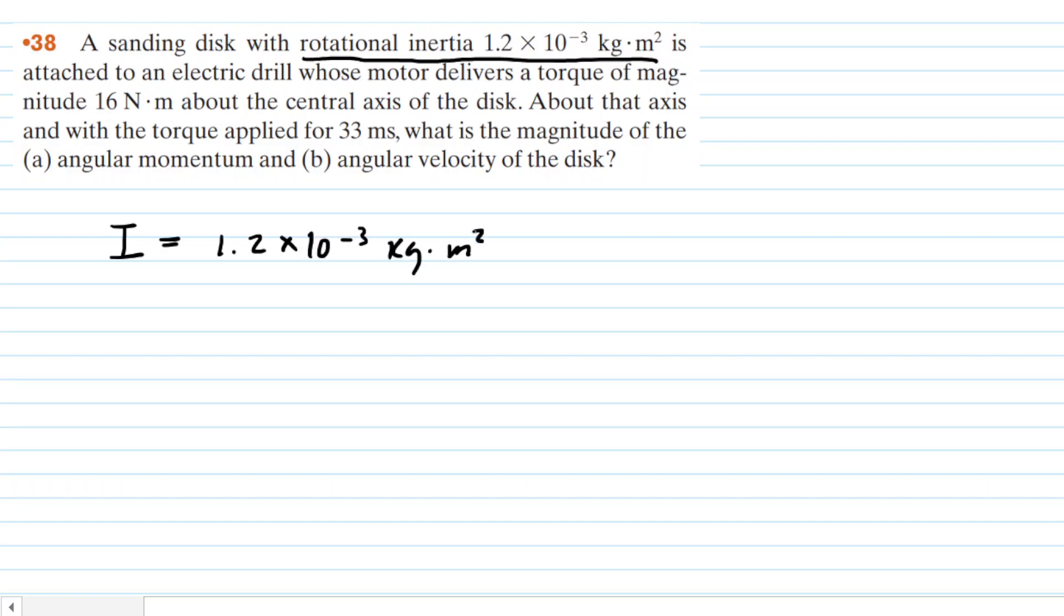We learn that this disc is attached to an electric drill whose motor delivers a torque of magnitude 16 newton meters. We symbolize torque by tau, so τ = 16 N·m. With the torque applied for 33 milliseconds, that's a time value. We must convert that into seconds by multiplying by 10 to the negative 3.